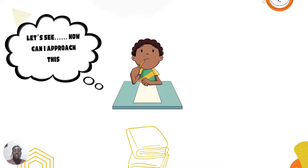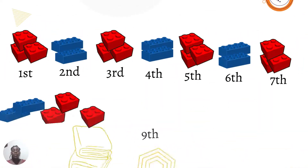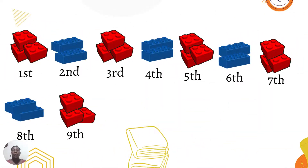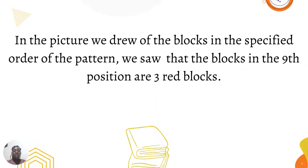Let's see how we can approach this question. We can draw a diagram. In the picture diagram that we drew of the blocks in the specified order of the pattern, we saw that the blocks in the ninth position are three red blocks.